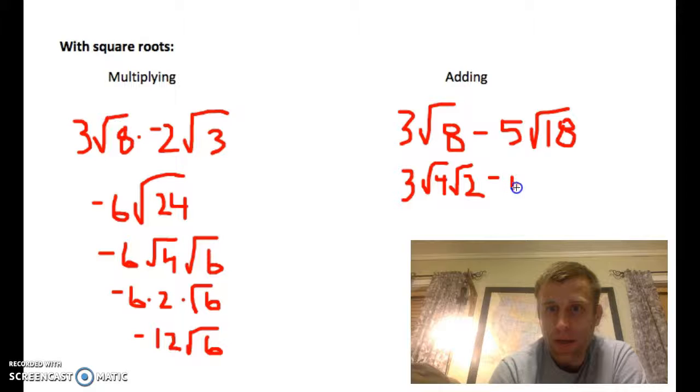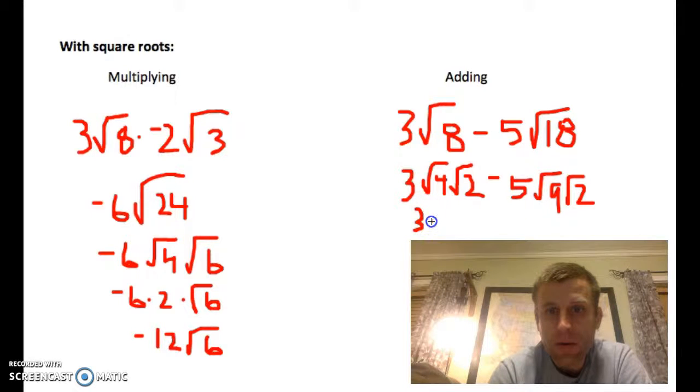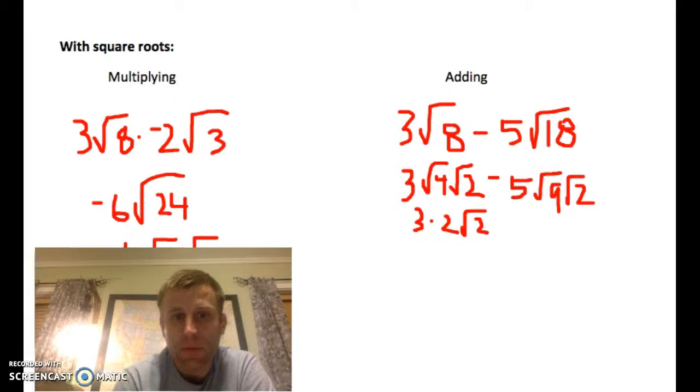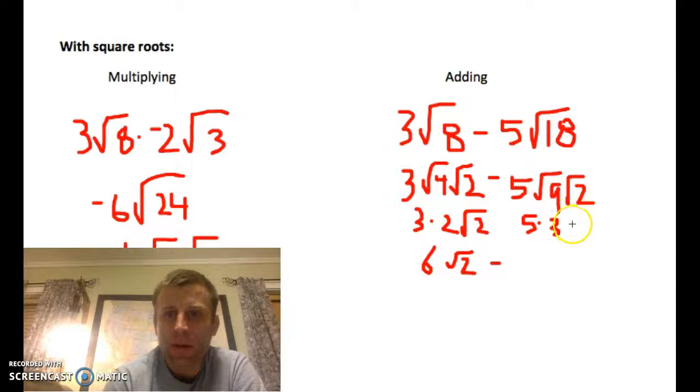And eighteen, perfect square factor is nine. So, break that into square root of nine, square root of two. So we got three times two, square root of two. And then minus, what's this, five times three, square root of two, which is fifteen square root of two.